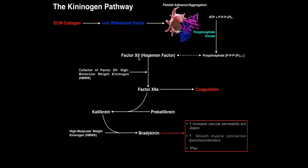In the intrinsic pathway, we start with a protein called Factor 12. Just a note on naming: all coagulation factors are given the name 'factor' followed by a Roman numeral — for example, Factor XII — and sometimes just the numeral is written without 'factor' in front. In its default written form, the factor is inactive. When it becomes activated by cleavage or binding, we add a lowercase 'a' at the end to denote the active form.